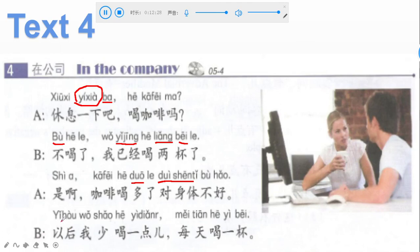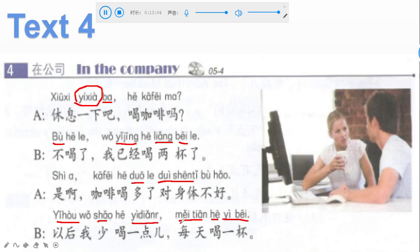B: 以后我少喝一点, 每天喝一杯. 以后 is the new word — meaning in the future or later. 少 means less (compared to 多 which means much/many). 一点 is a little. 每天 is every day. 一杯 is one cup. So: in the future I'll drink a little less — one cup a day.